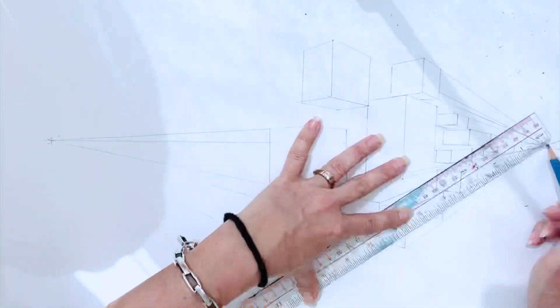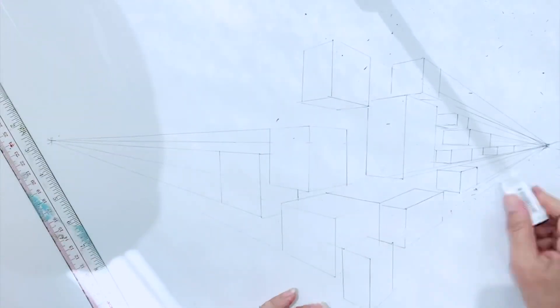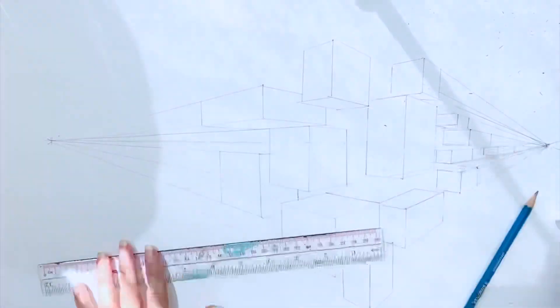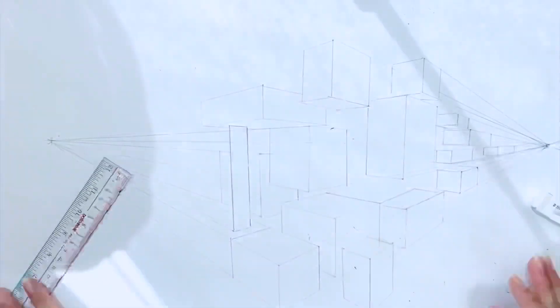Remember, those blocks above the horizon line will reveal their base or underneath section, just as those blocks below the horizon line will reveal their top section.